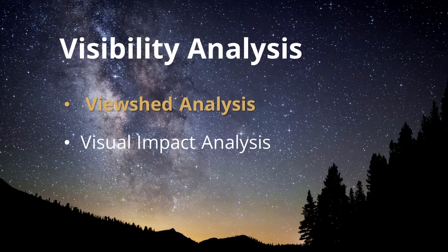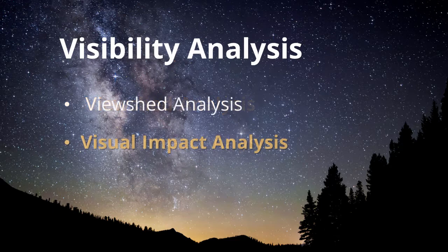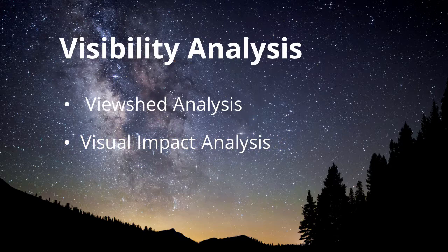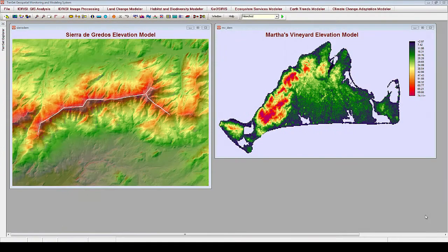Viewshed analysis determines all areas in an image that can be seen from one or more viewpoints, while visual impact analysis determines the proportion of a set of features that can be viewed from any location in an image. We will learn about both types of analysis in this tutorial using two different areas of interest.